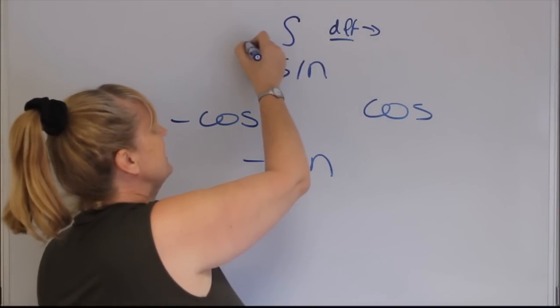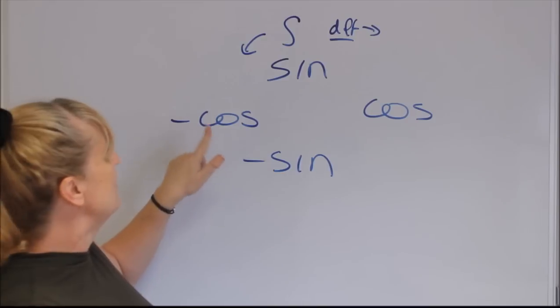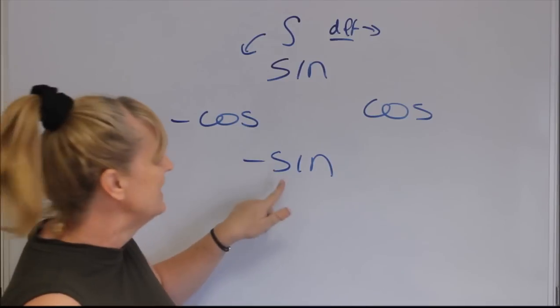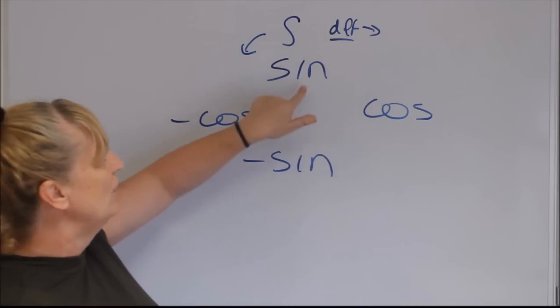So when you're integrating, integrating sine gives you negative cos. The integral of negative cos gives you negative sine. The integral of negative sine gives you cos. And the integral of cos gives you sine.